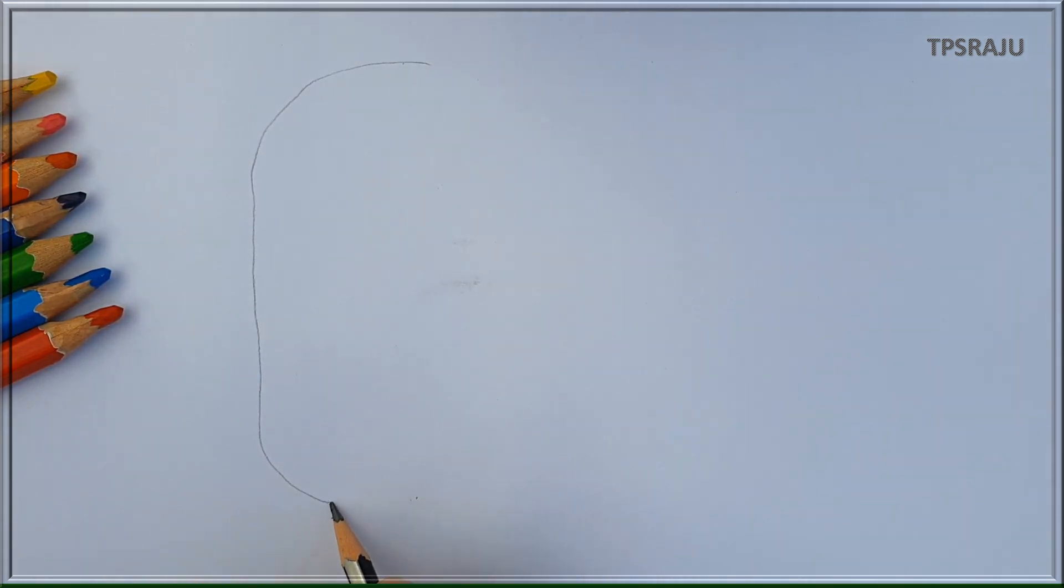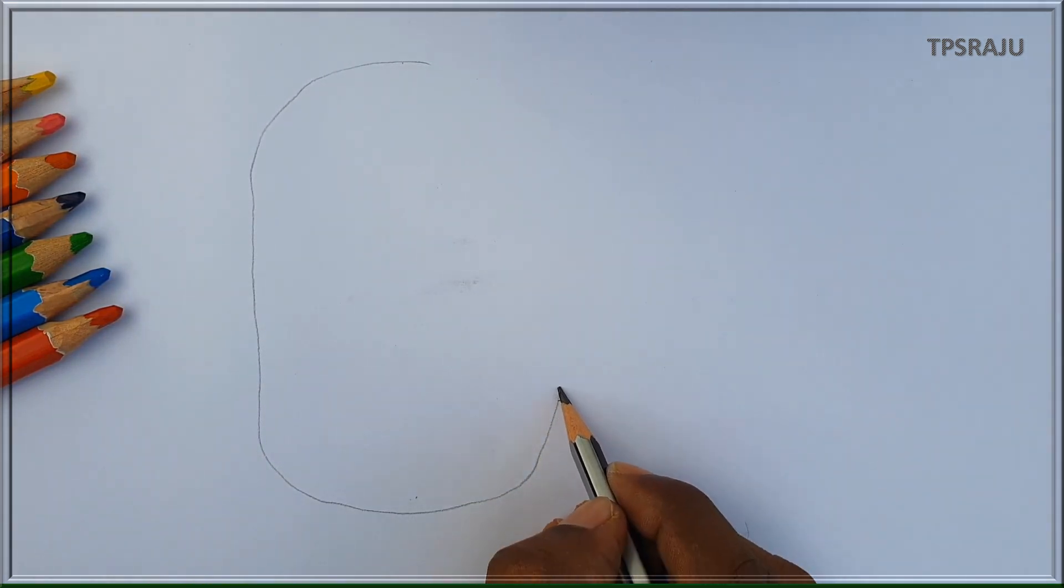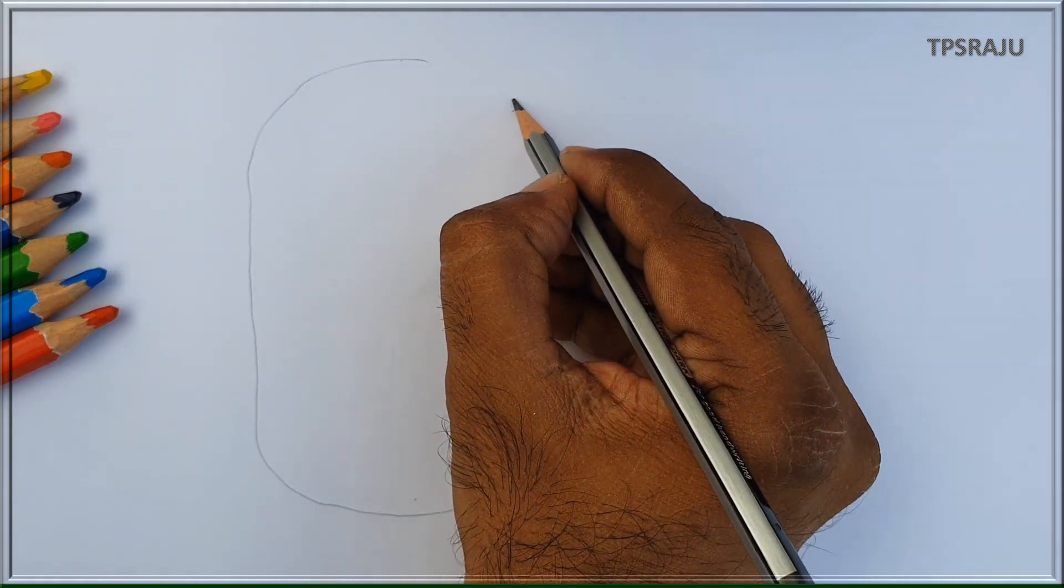Each and every cell is surrounded by a thin layer called plasma membrane. This is plasma membrane.